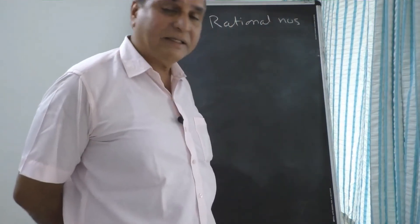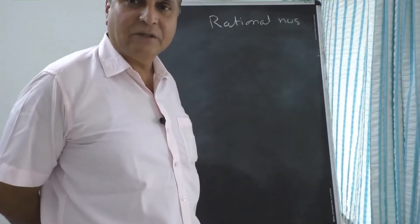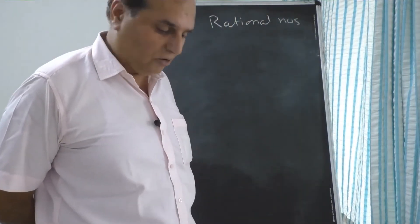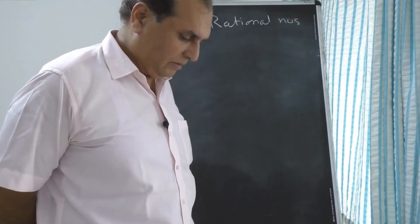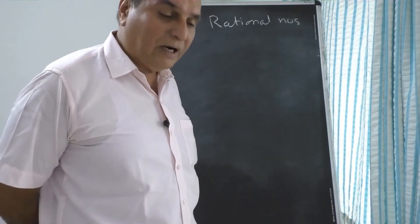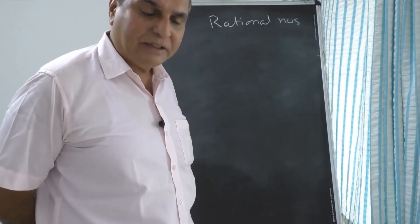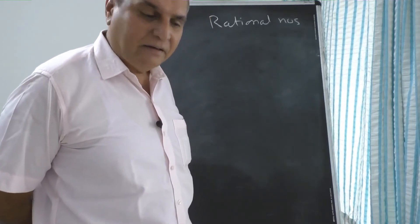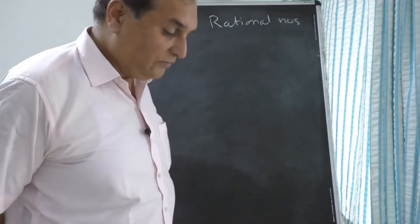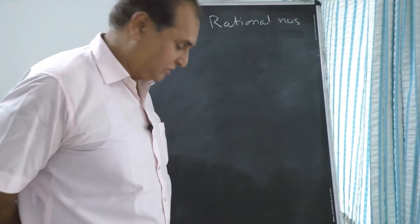If you add unlike terms, your sum will go wrong. For like terms, take the rational coefficients out.